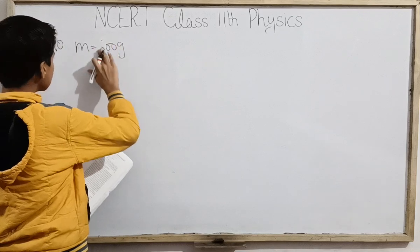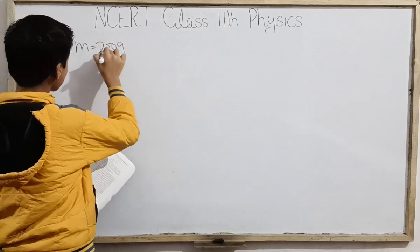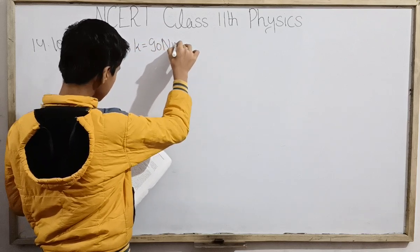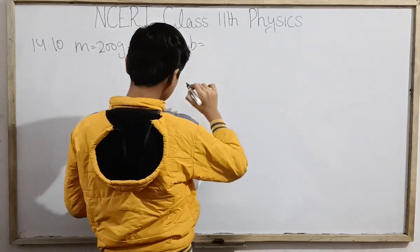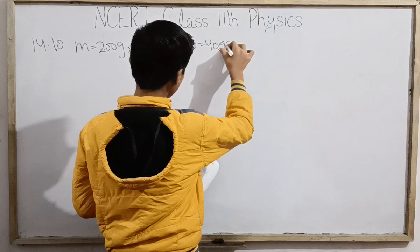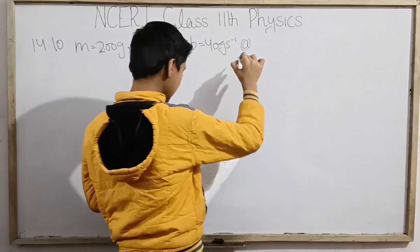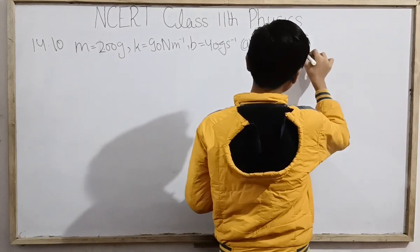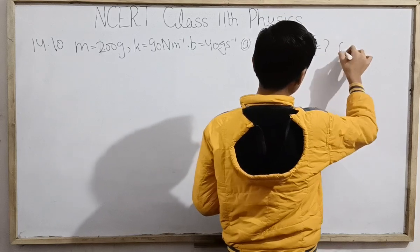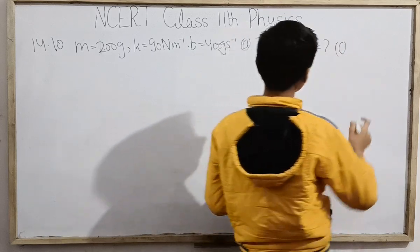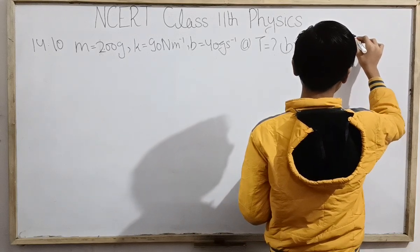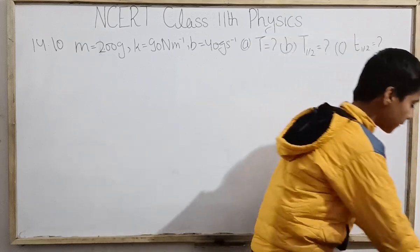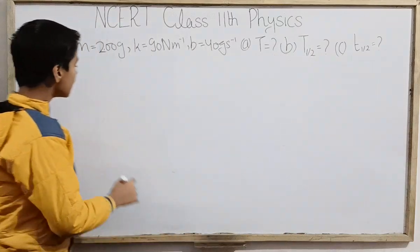Given: mass of the block is 200 grams, spring constant is 90 newton per meter, and damping constant b is 40 gram per second. In part (a) we need to find the period of oscillation. In part (b) we need to find the time taken for amplitude of vibration to drop to half its value. And in part (c) we need to find the time taken for total mechanical energy to drop to half of its initial value.